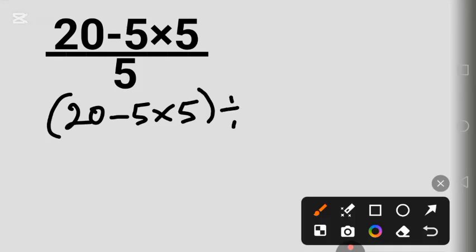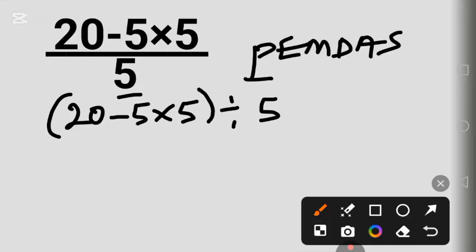Using PEMDAS, which stands for Parentheses. Inside this parentheses we have 20 minus 5 times 5. Following the order of operations, you can see that multiplication comes first before subtraction. So we solve multiplication: 5 times 5 gives us 25.